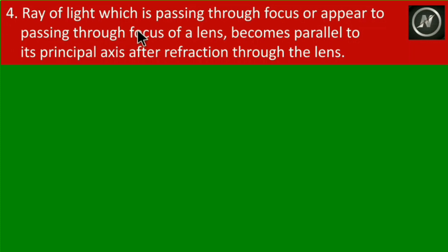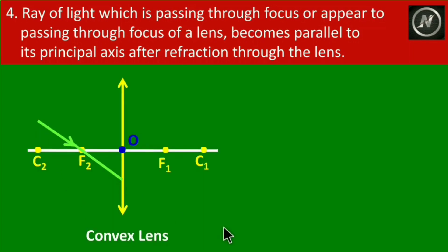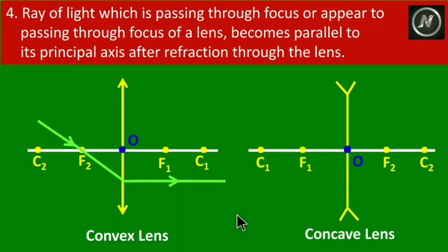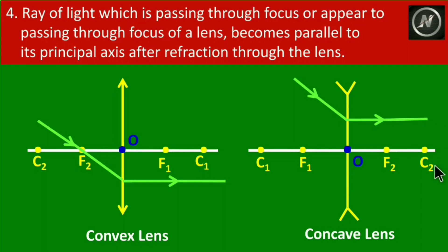Rule four: A ray of light which is passing through the focus, or appears to pass through the focus of a lens, becomes parallel to its principal axis after refraction. For a convex lens, the ray through the focus becomes parallel to the principal axis. For a concave lens, a ray appearing to pass through the focus also becomes parallel to the principal axis after refraction.